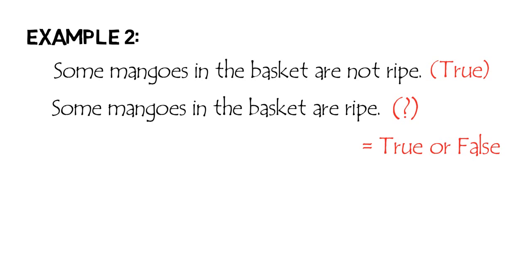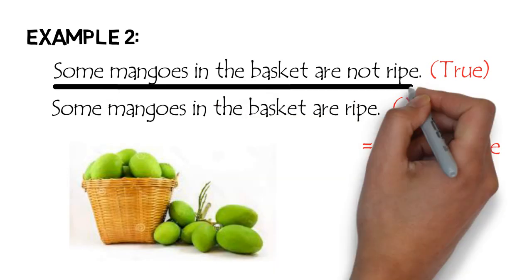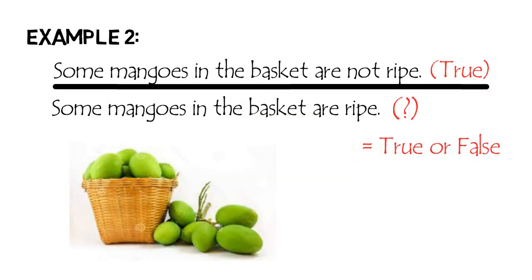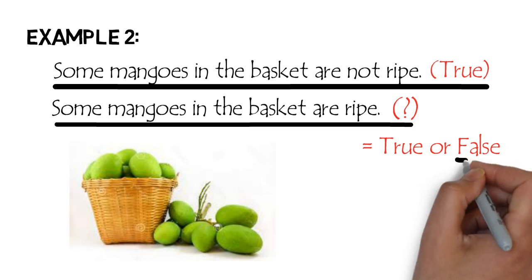Consider this: imagine we are facing a basket of mangoes. Suppose we see that all mangoes on the side of the basket facing us are not ripe. Then the proposition 'Some mangoes in the basket are not ripe' is true. However, we cannot be certain about the truth value — therefore doubtful — of the proposition 'Some mangoes in the basket are ripe.' This is because we see only one side of the basket. It is possible that the rest of the mangoes in the basket are not ripe; therefore, 'Some mangoes in the basket are ripe' is false.